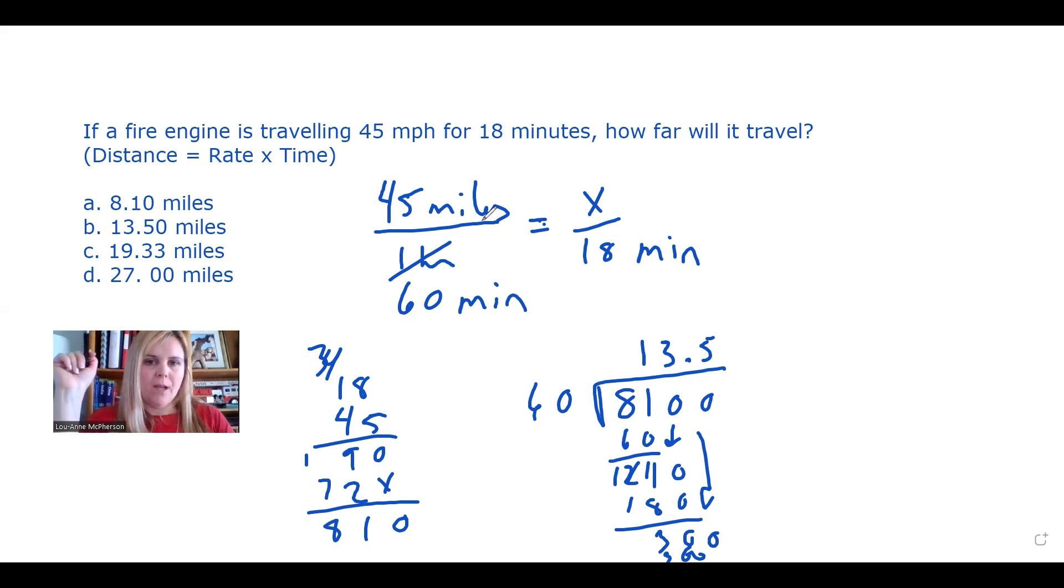So the way you set up your rate is you're going to put 45 miles over one hour. So I'm right here for those of you who are following along. And then your proportion is equivalent.